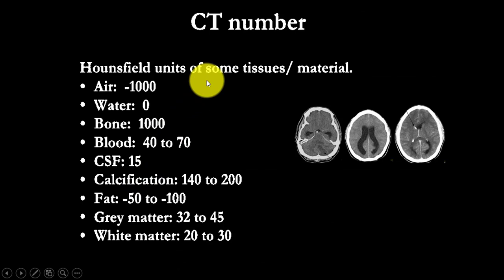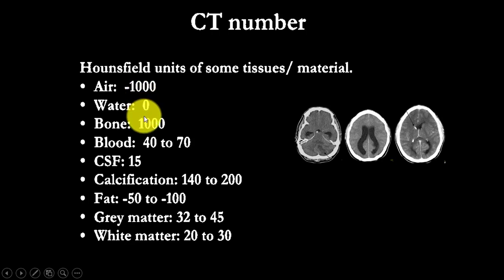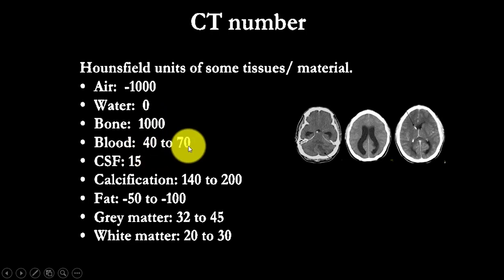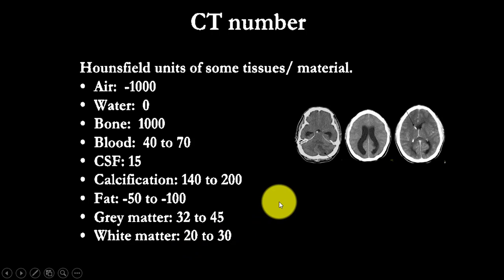This is the Hounsfield unit scale, representing the density of tissues and materials. The processing of CT images is called windowing. Air has a Hounsfield unit of minus 1000, bone is plus 1000, and water is zero. Blood is 40 to 70, CSF is 15, calcification is 140 to 200, fat is minus 50 to minus 100, gray matter is 32 to 45, and white matter is 20 to 30. The more dense the structure, the higher the Hounsfield unit.